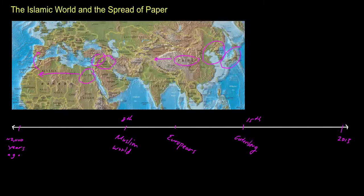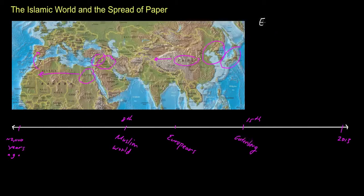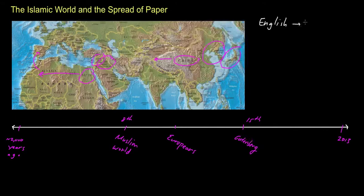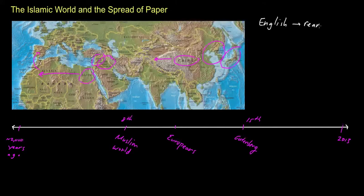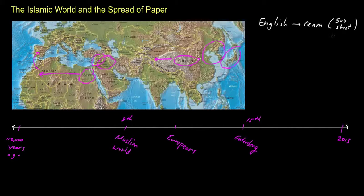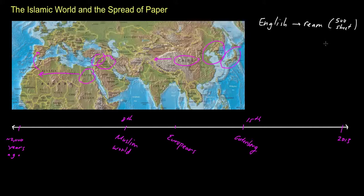So for starters, one piece of evidence regarding the overall prominence or importance of the Muslim world in the development of paper can actually be seen when you look at the English term, the English term ream. So the word ream, in case you don't know, basically is an English word. It stands for 500 sheets of paper. Basically, when you buy paper, for example, when you go to Staples and you buy paper at the store, you buy them in these thick packages of 500 sheets, these are reams of paper.